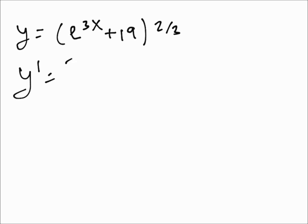Let's see what y prime is going to be. In the power rule, the first thing you write is the power again, we have 2/3, then you write the whole thing e^(3x) + 19, but you change the power by subtracting one, so it's 2/3 minus 1, that's going to be minus 1/3.